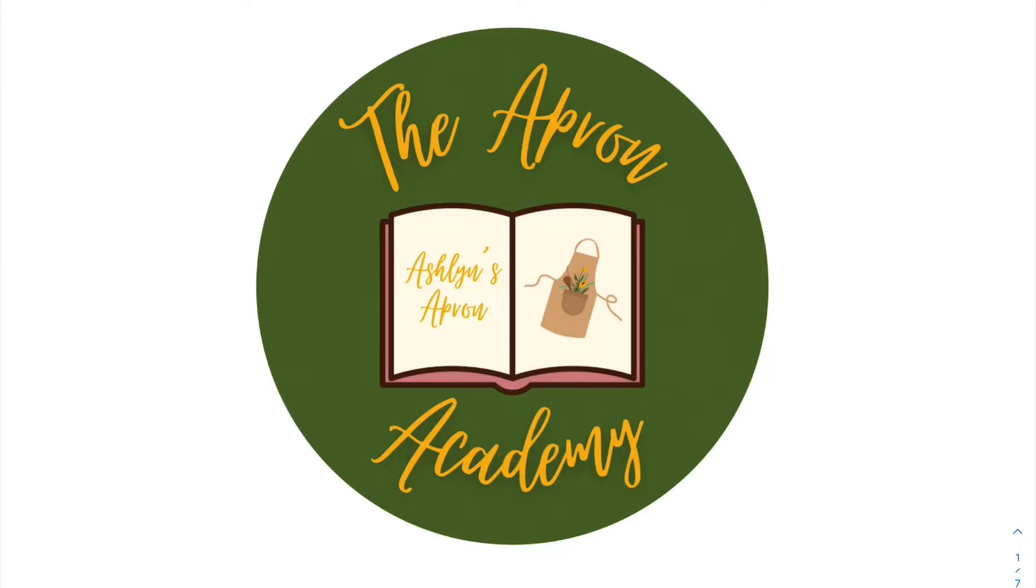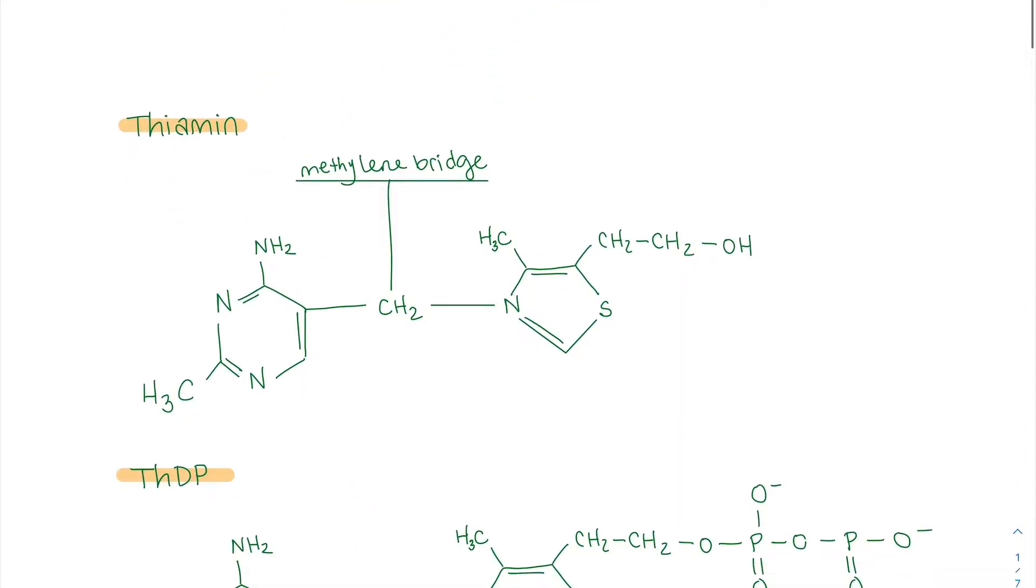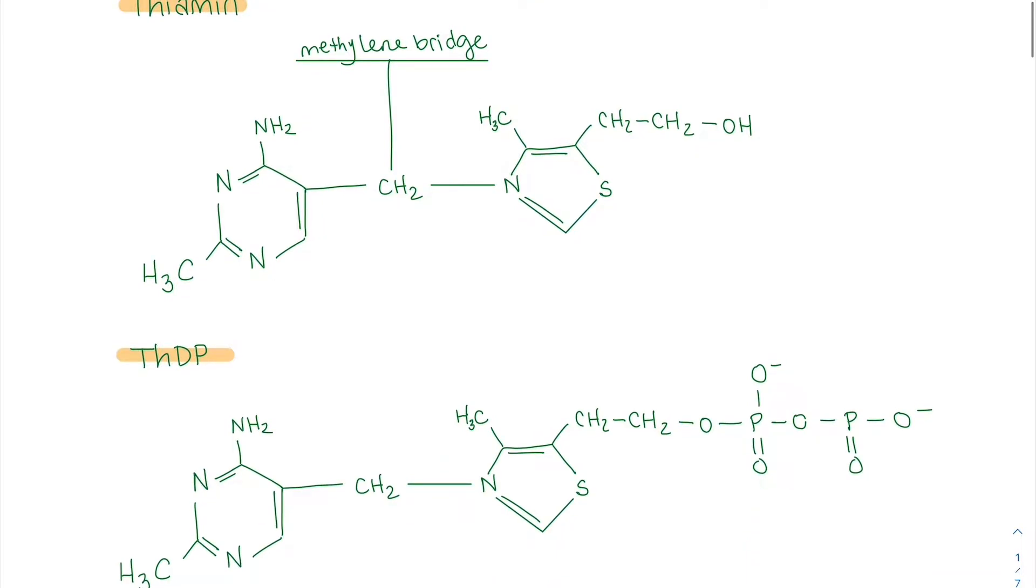Today we're going to be talking about thiamine, which is also known as vitamin B1. So here's our thiamine molecule, and then we also have THDP, which is the cofactor for thiamine. So many of these vitamins have two cofactors. This is the only one for thiamine.